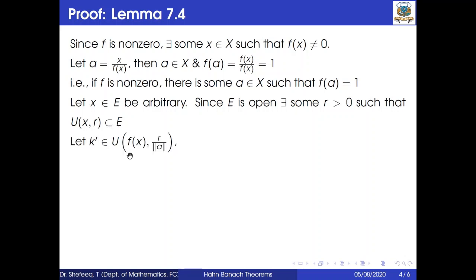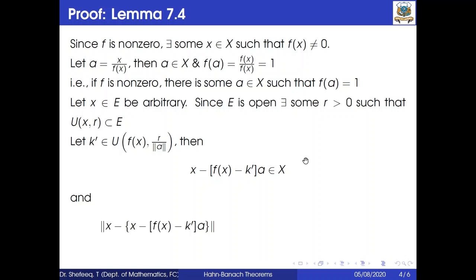Now let k-prime belong to the open ball about f of x with radius r divided by norm of a. Then x minus (f of x minus k-prime) times a belongs to x, since x belongs to x and a belongs to x and (f of x minus k-prime) belongs to k.